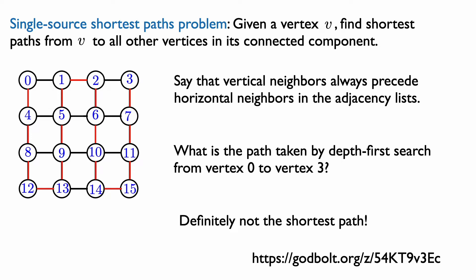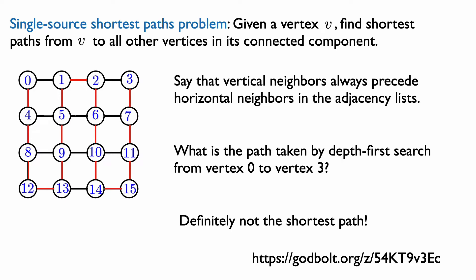So, to find shortest paths, we are not going to be able to use depth-first search. We need to find something else. This is where breadth-first search comes in. We can use breadth-first search to solve this single-source shortest path problem. Breadth-first search is actually quite closely related to depth-first search. In fact, you can view breadth-first search as depth-first search where you just change the data structure. Breadth-first search is exactly like the iterative version of depth-first search where we replace the stack data structure with a queue.